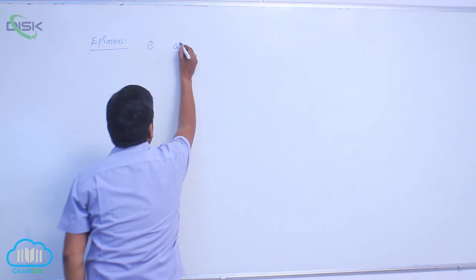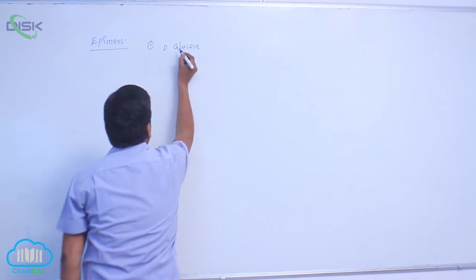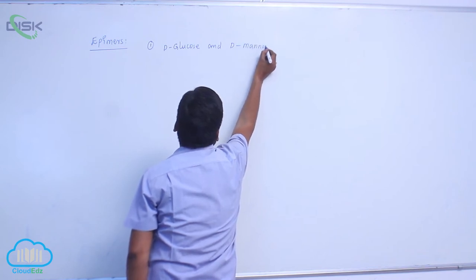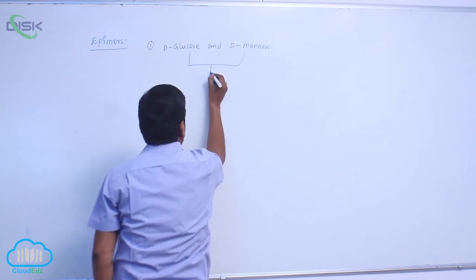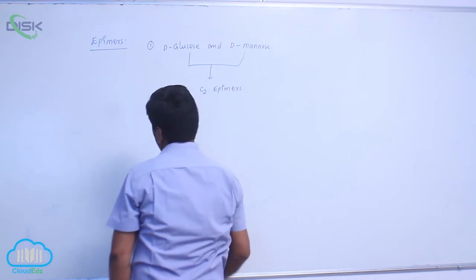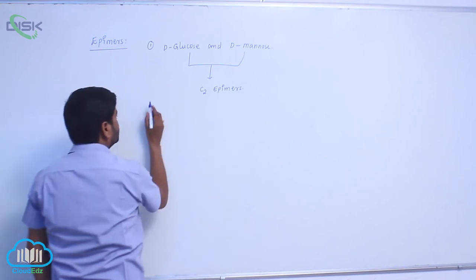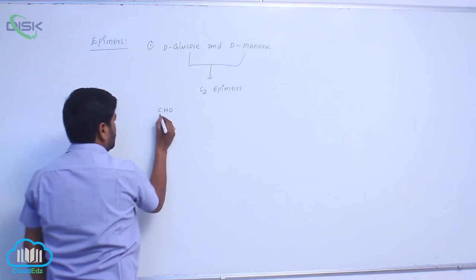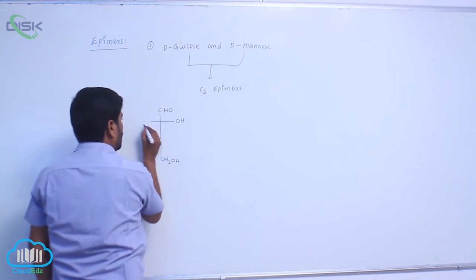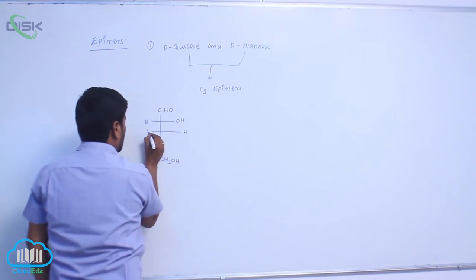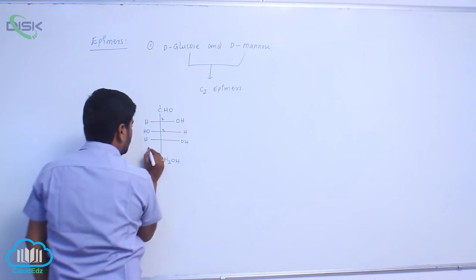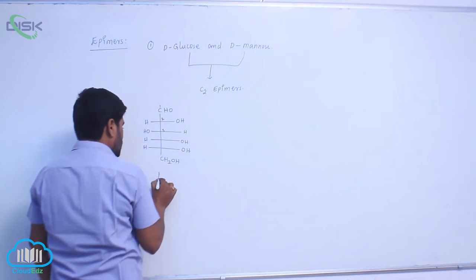For example, D-glucose and D-mannose are known as C2 epimers. In glucose, the C2 carbon has the hydroxyl group on the right side.